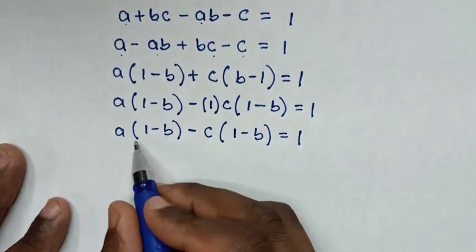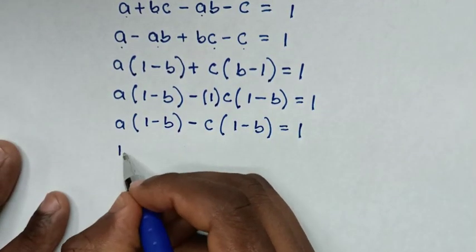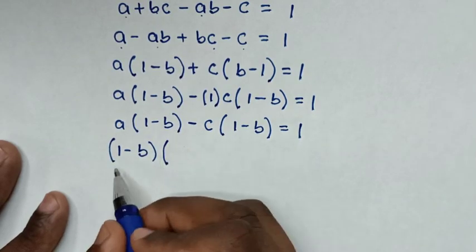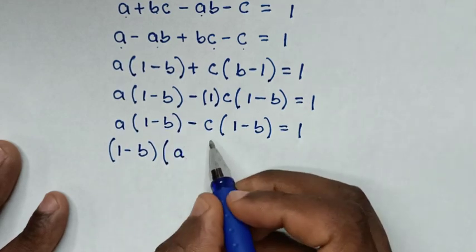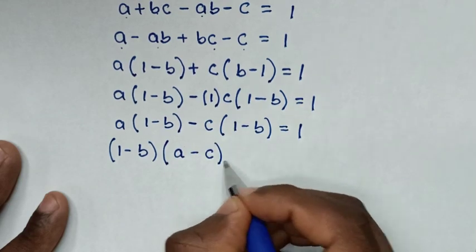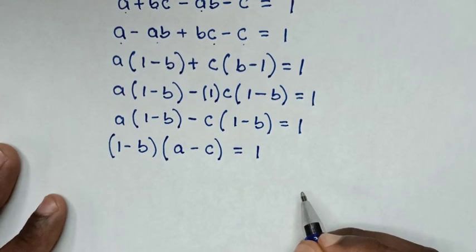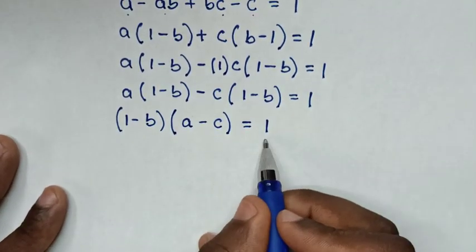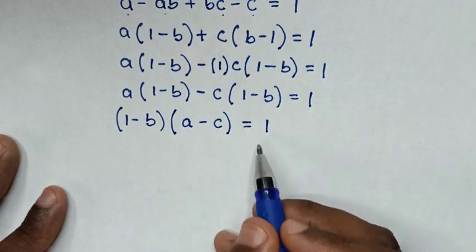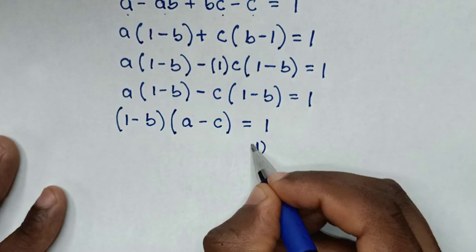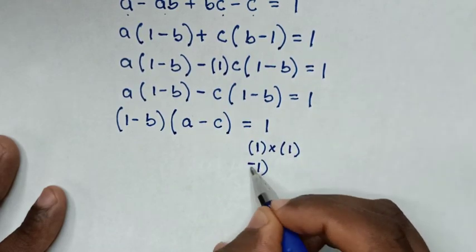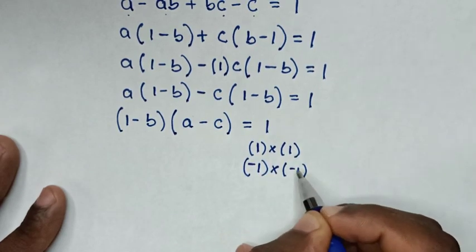Now we factor out (1 minus B), giving (1 minus B)(A minus C) equals 1. To get a product of 1, we have two choices: either 1 times 1, or negative 1 times negative 1.